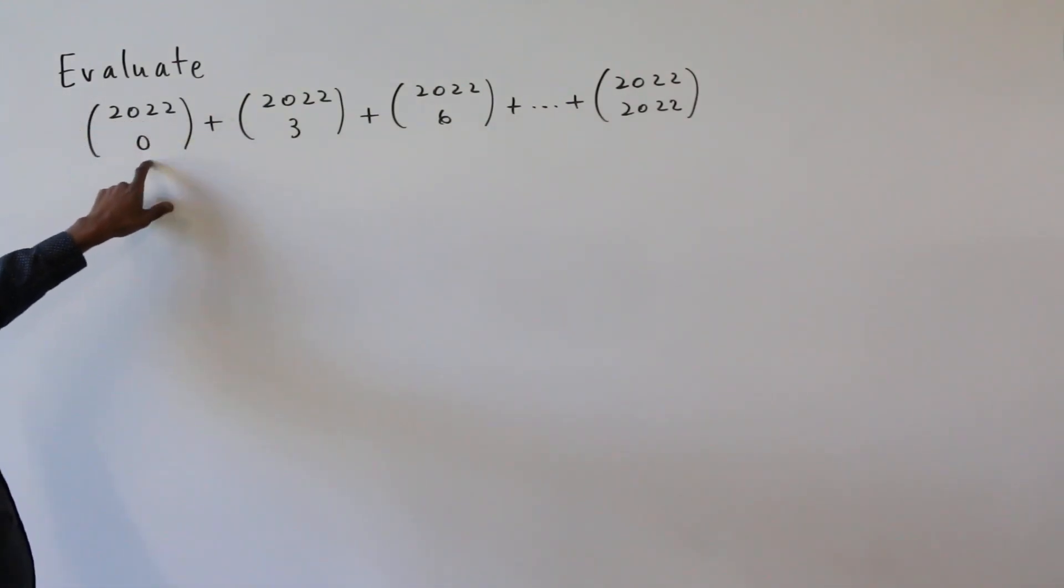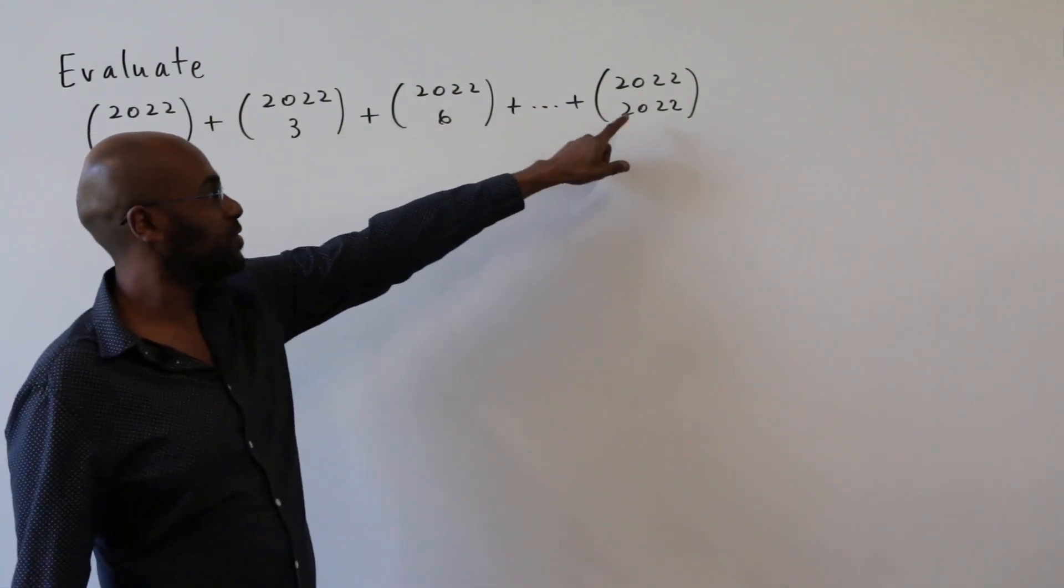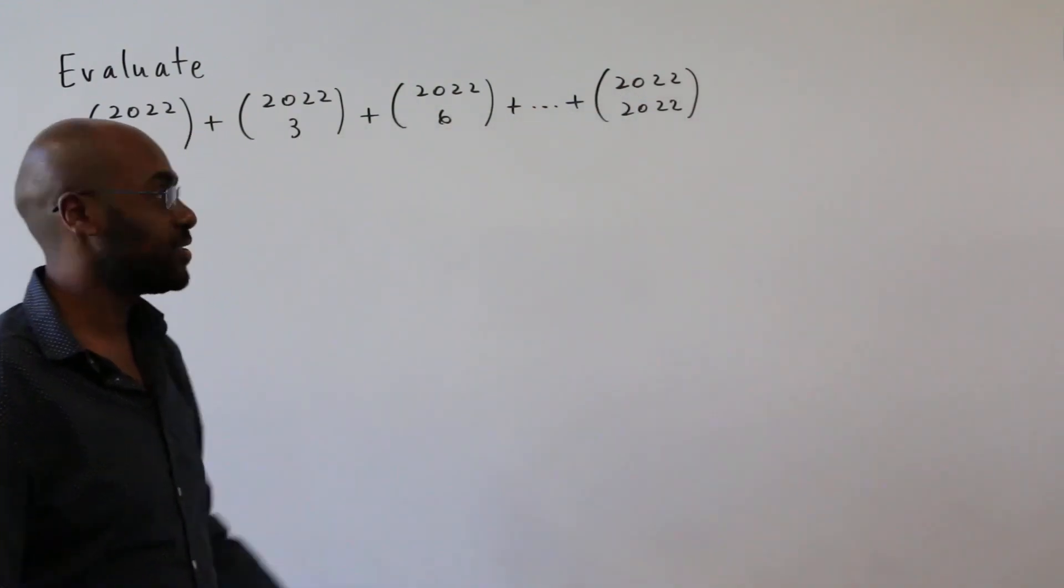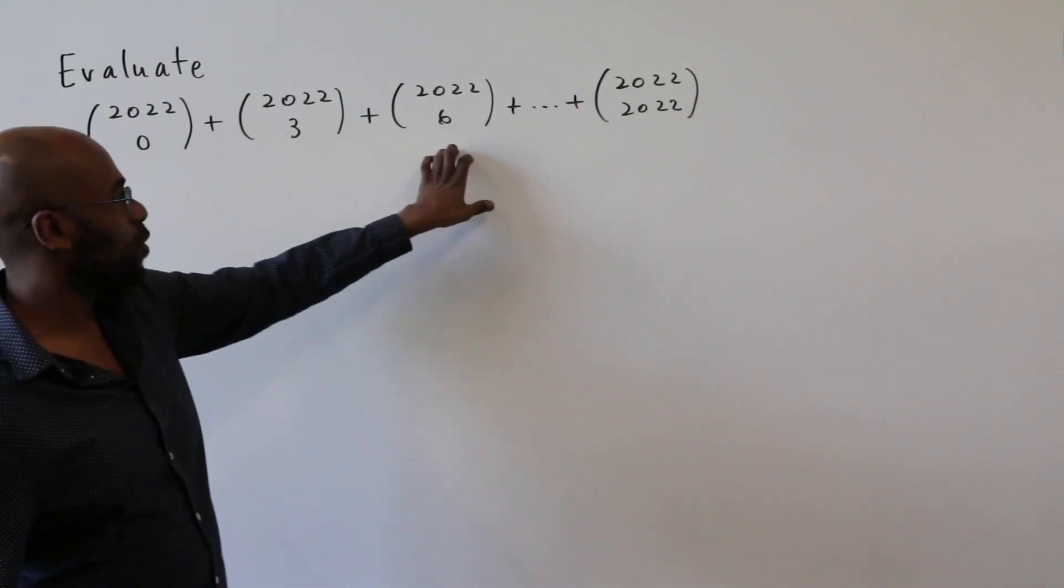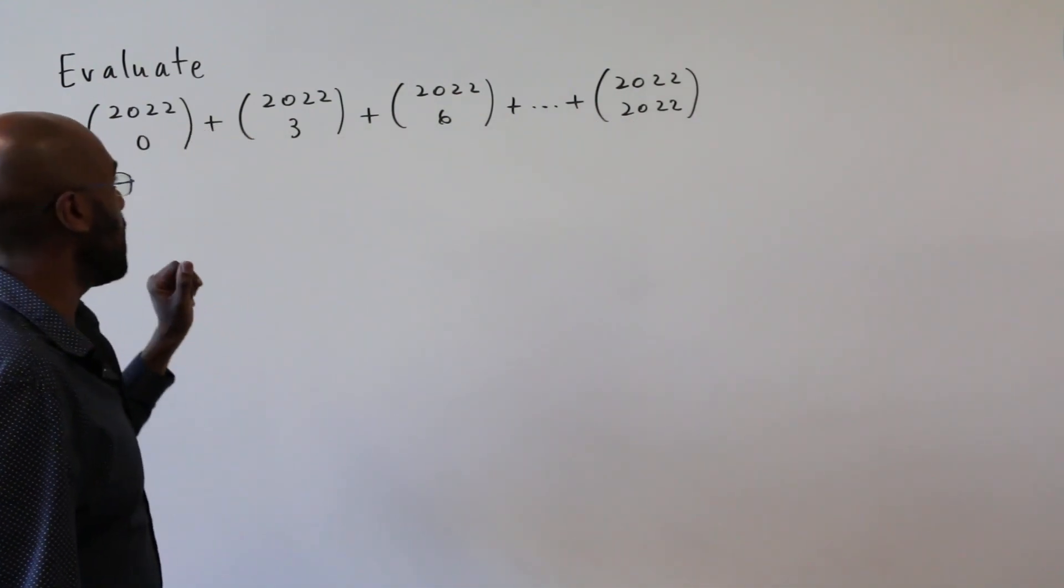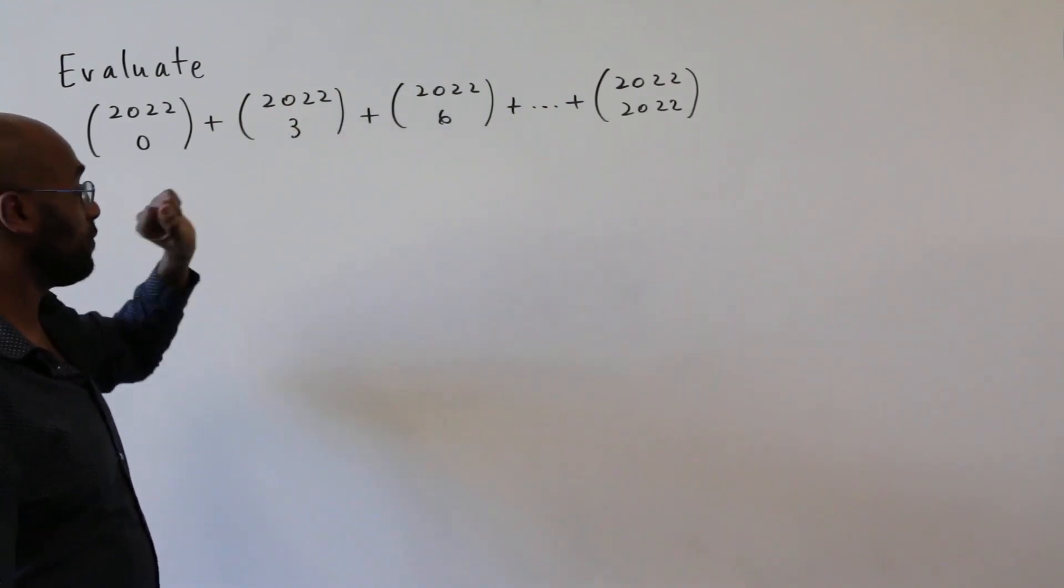So we have 2022 choose zero plus 2022 choose three, choose six, up to 2022 choose 2022. So we're summing every third binomial coefficient here, and we notice 2022 actually is a multiple of three.